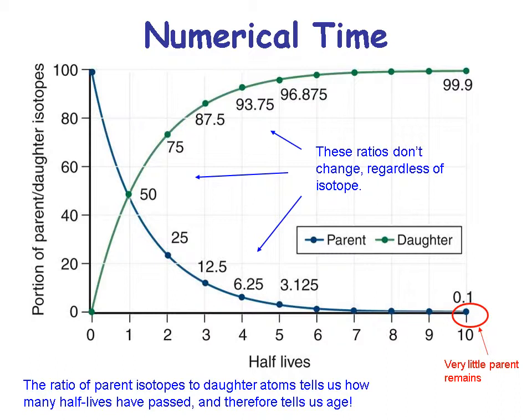The ratio of parent isotopes to daughter atoms tells us how many half-lives have passed and therefore tells us the age. On a graph with half-lives on the horizontal axis and proportion of parent on the vertical scale: we start with 100% parent. After one half-life we have 50, after two we have 25, after three half-lives we have 12.5, then 6.25, and so on. At some point it gets too small to measure — which becomes especially important for carbon-14, which only works for recent material.